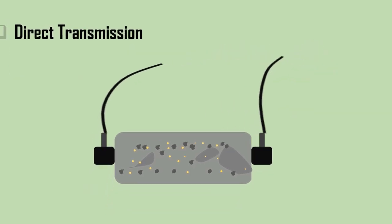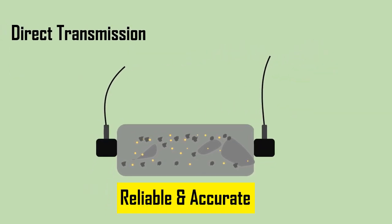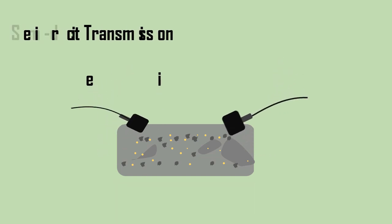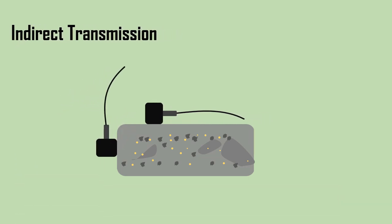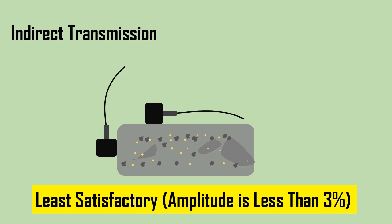Direct transmission is the most reliable from the point of view of transit time measurement and is accurate. The semi-direct method can sometimes be used satisfactorily if the angle between the transducers is not too great. The indirect method is the least satisfactory, since the received signal amplitude may be less than 3% of that for a comparable direct transmission.